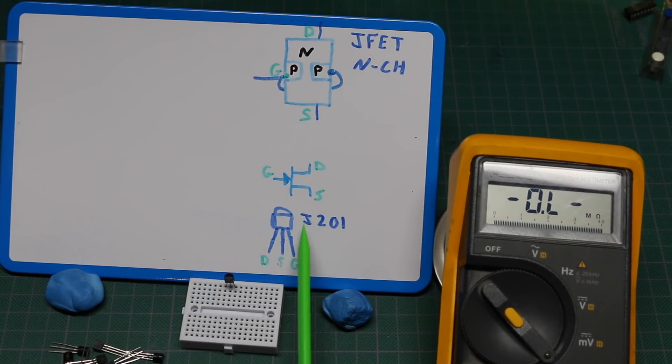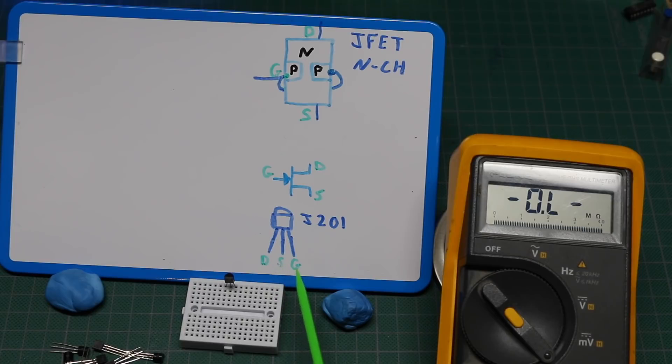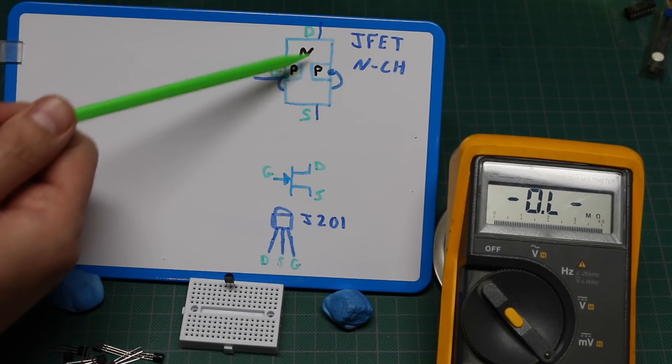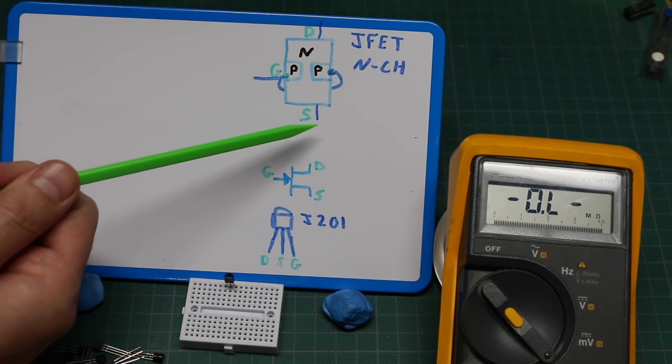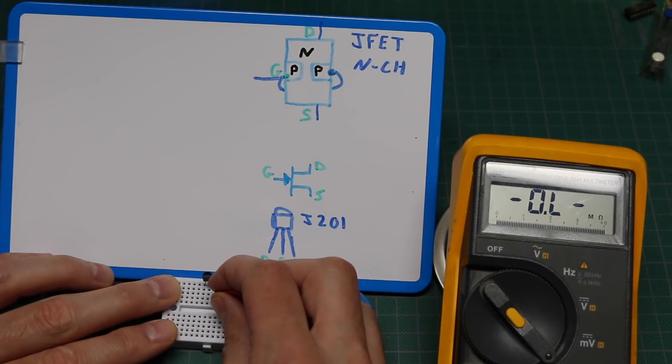When I wanted to test this J201 n-channel JFET, I looked it up and the pinouts left to right should be drain, source, gate. If I short gate to source to open this channel and then probe resistance from source to drain, I should see a maximum of a couple hundred ohms.